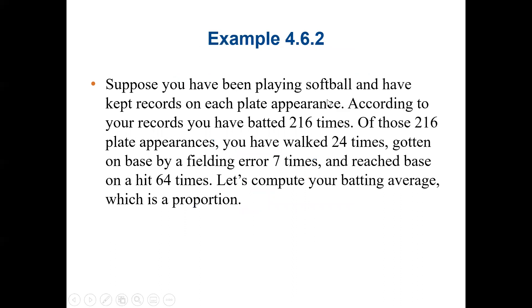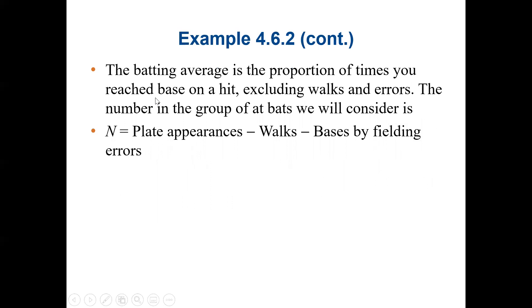In this example, suppose you have been playing football and have kept records on each plate appearance. According to your records, you have batted 216 times. Of those 216 plate appearances, you have walked 24 times, got on base by fielding error 7 times, and also reached base on a hit 64 times. Let's compute your batting average, which is a proportion. The batting average is the proportion of times you reach base on a hit, excluding the walks and also the errors.